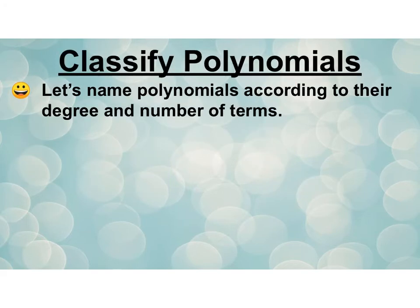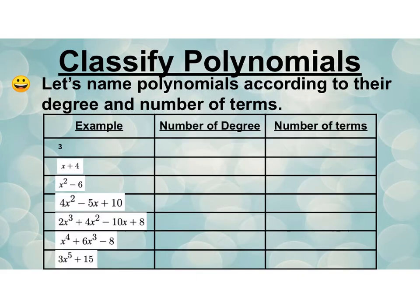When I ask you to classify polynomials, that means you're going to name them according to two things: their degree and their number of terms. So let's take a look. These are just examples. First I have just the plain old number three. So that one has kind of just an x to the zero. We're going to call that a constant. And number of terms, there's only one there. So that means mono. Mono means one. So this is a monomial.